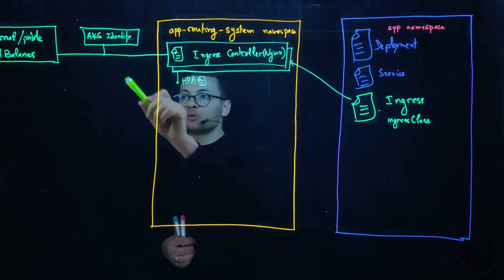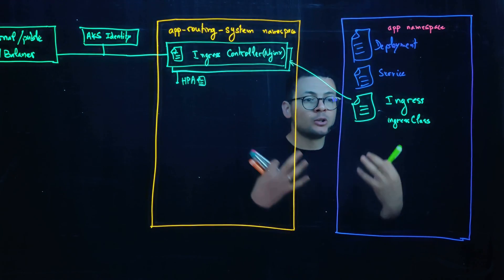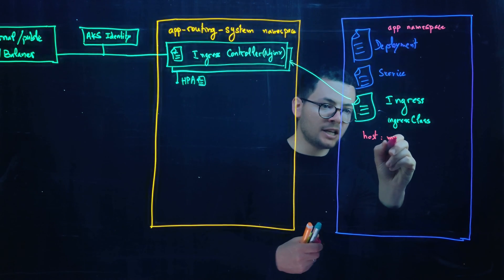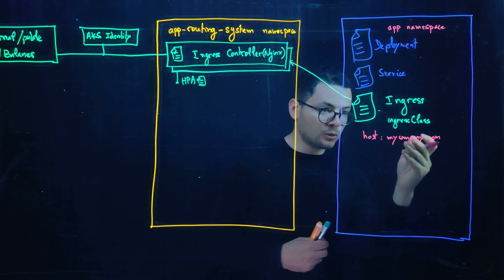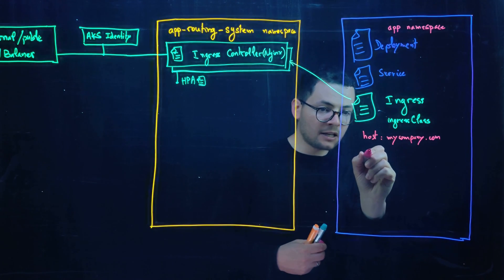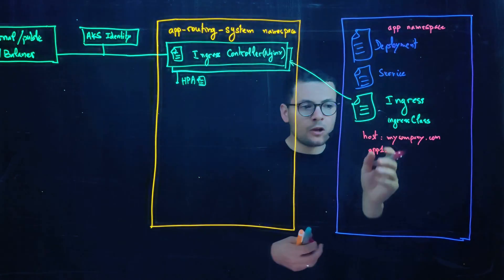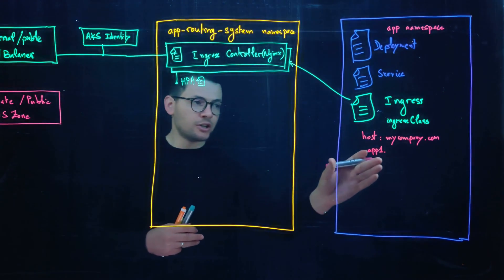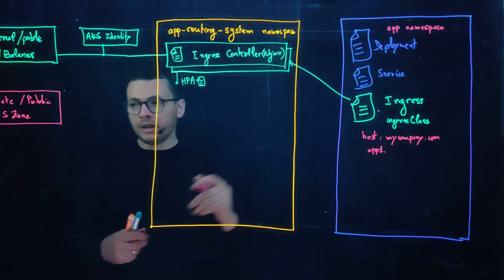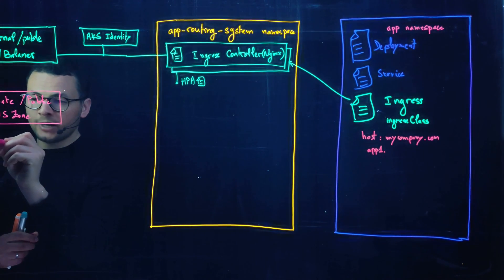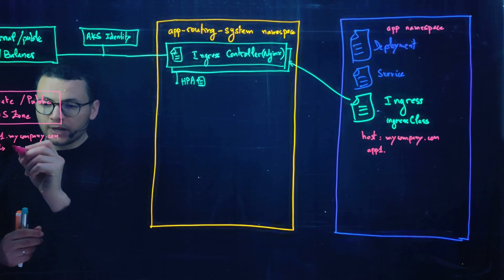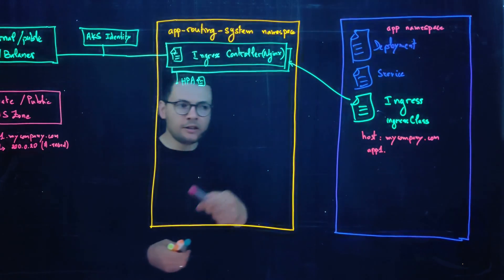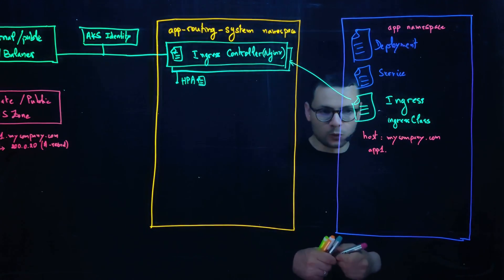At this point your application is exposed through a public or private IP address, but you likely want a custom domain name. Within the ingress you configure a host — enterprises typically purchase a custom domain like `mycompany.com` and add a subdomain like `app1.mycompany.com`. Those DNS records are configured through a public or private DNS zone in Azure, where the infrastructure team provisions the subdomain and maps it to the specific IP address by creating an A record.